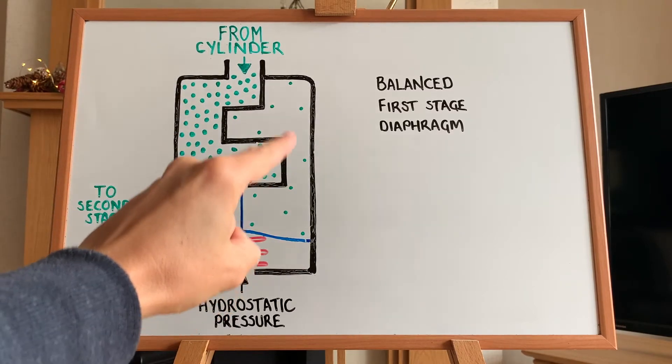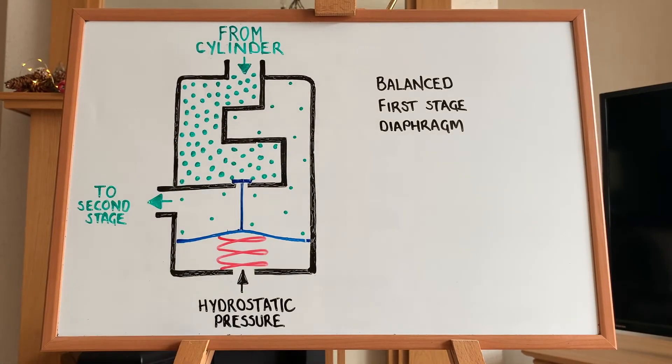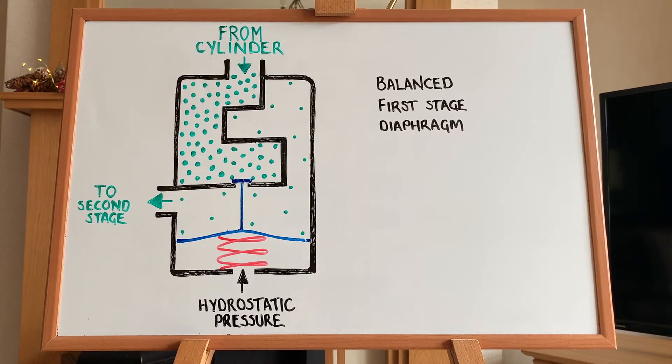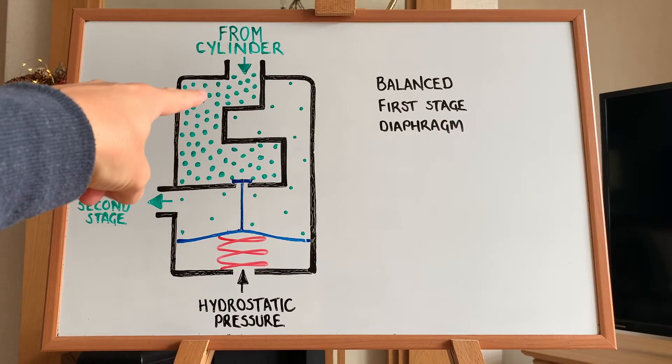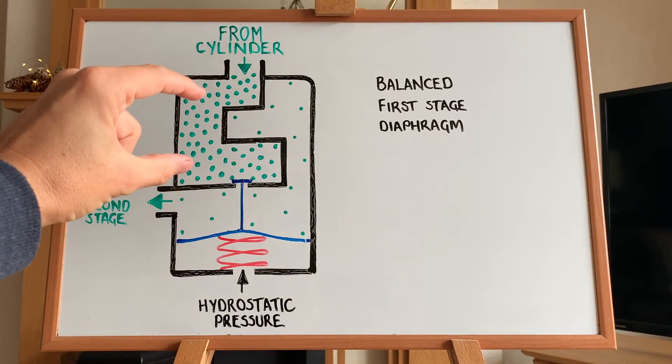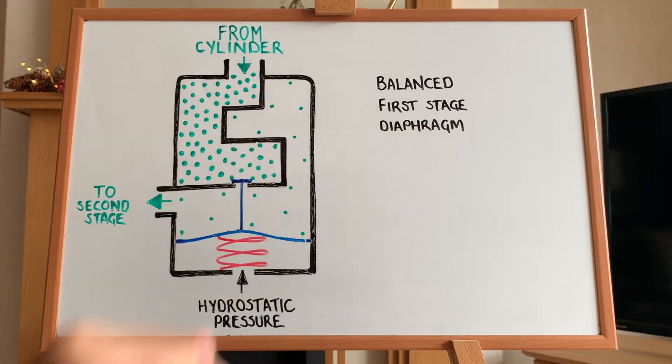High pressure chamber, intermediate pressure chamber. The green dots basically just represent gas pressure. So we see we have a higher pressure gas in this chamber than in this chamber because high pressure chamber, intermediate pressure chamber.